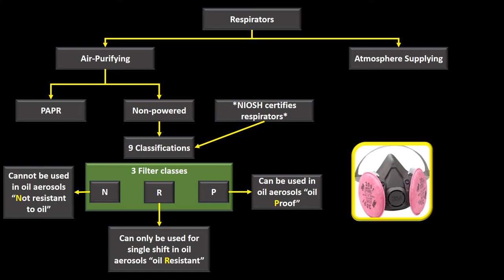These classifications also pertain to color coding. The P-class filters are always magenta or purple. You can see a P-class non-powered air purifying respirator here because the cartridges are purple.